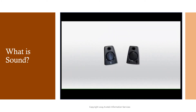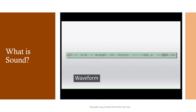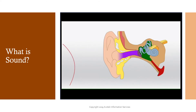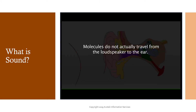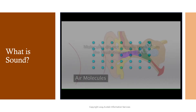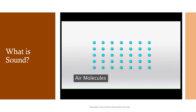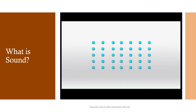As the loudspeaker vibrates, it causes the surrounding molecules to vibrate in a pattern that can be represented by a waveform. When this waveform is received by the ear, the eardrum vibrates in the same pattern or frequency as the waveform. It is important to understand that air molecules do not actually travel from the loudspeaker to the ear — that would be wind. Each air molecule only moves a very small distance as it vibrates, but it causes the molecules next to it to vibrate, resulting in a rippling effect.